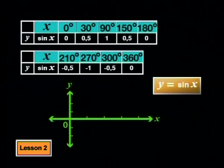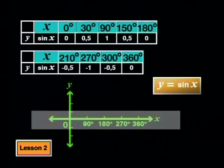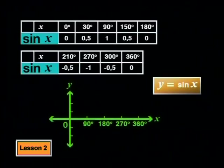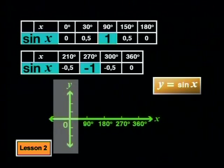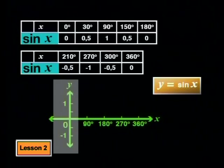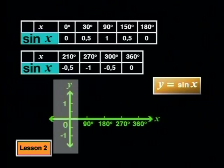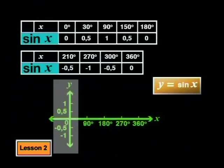All we need to do is decide what measurements to use on which axis. We need the angles from 0 to 360 degrees on the x-axis. We saw last time that the sine values have a maximum of 1 and a minimum of minus 1. So all we need on the y-axis is the numbers minus 1, 0 and 1. But there are so many values to plot between these points, so let's spread these out a bit and also mark 0.5 here and negative 0.5 here.